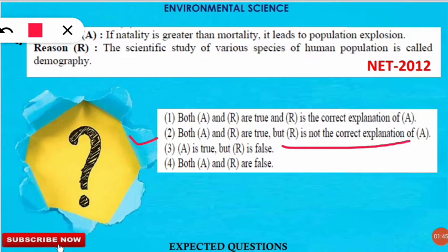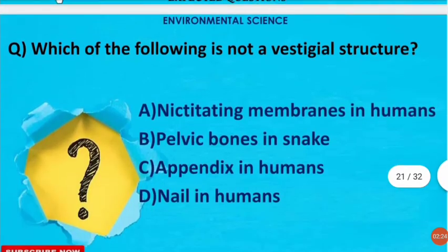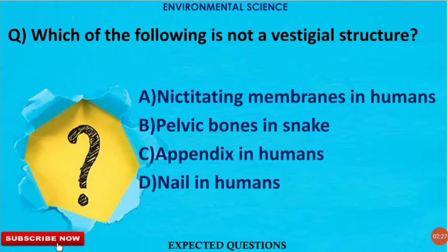Natality, that is the birth rate, if it is greater than the death rate (mortality), it will obviously lead to population explosion. Also, the scientific study of various species of human population is called demography — mortality, natality, and sex ratio all come under demography. But demography does not correctly explain why greater natality and lesser mortality causes population explosion.